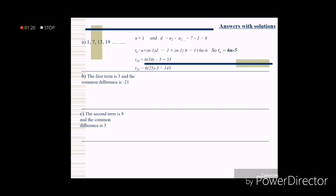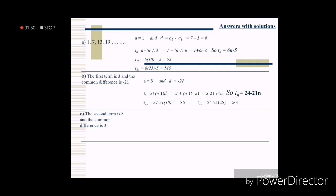Next, with first term a equals 3 and common difference d equals negative 21: using the formula, t sub n equals 3 plus (n minus 1) times negative 21. Distributing gives 3 minus 21n plus 21, so the general formula is t sub n equals 24 minus 21n. For the 10th term: t sub 10 equals 24 minus 21 times 10 equals negative 186. For the 25th term: t sub 25 equals 24 minus 21 times 25 equals negative 501.